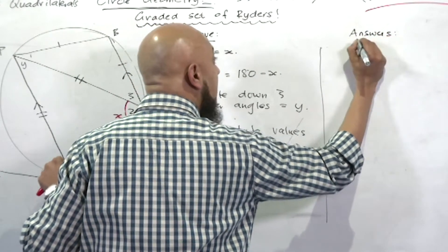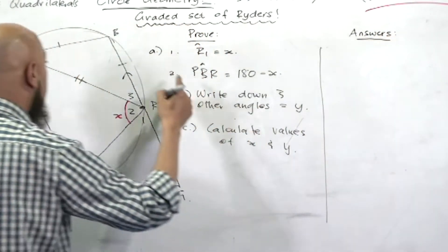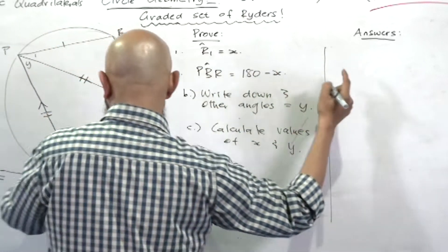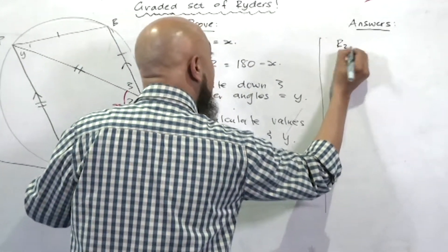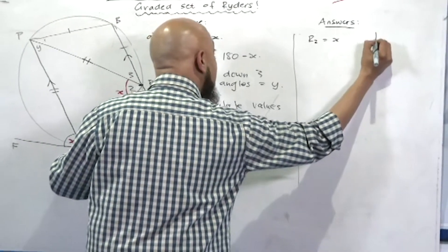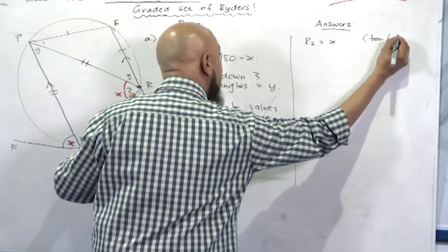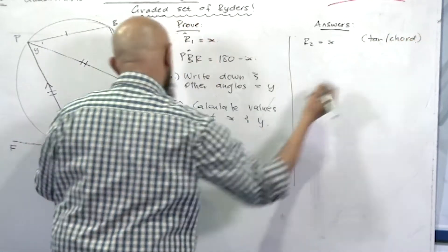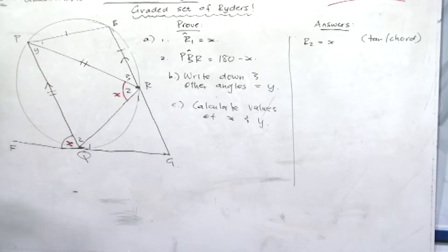Okay, so we've got angle r2, we said is equal to x, and the reason that we put is tangent-chord theorem. How does that help us in any way to get to r1?